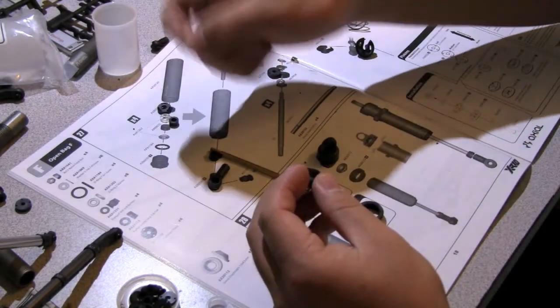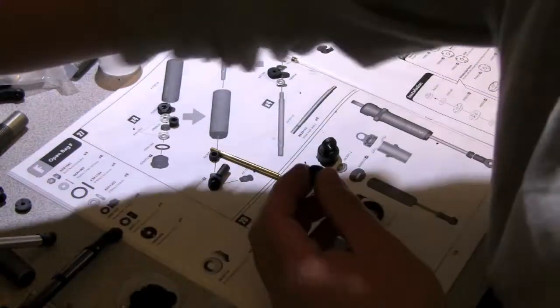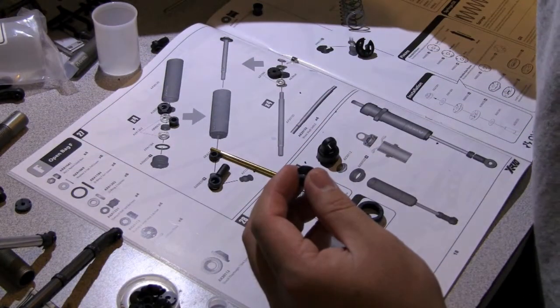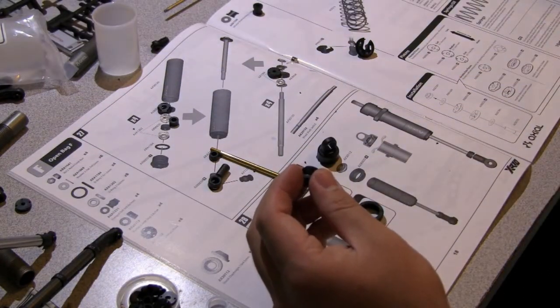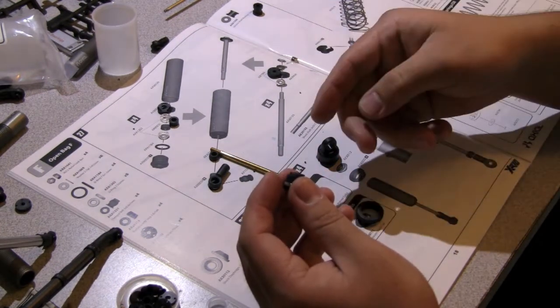So now you have these smaller o-rings. What you want to do is actually get grease and that way you don't run the risk of tearing the actual o-rings.